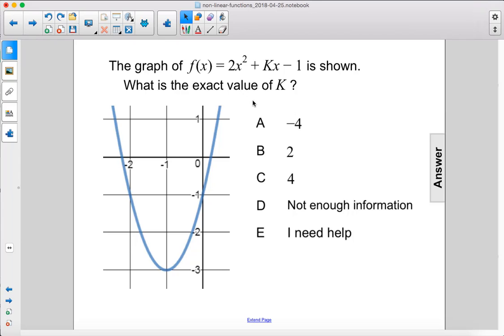The graph of f of x equals 2x squared plus kx minus 1. What is the exact value of k? Well, k is also where b is in standard form.